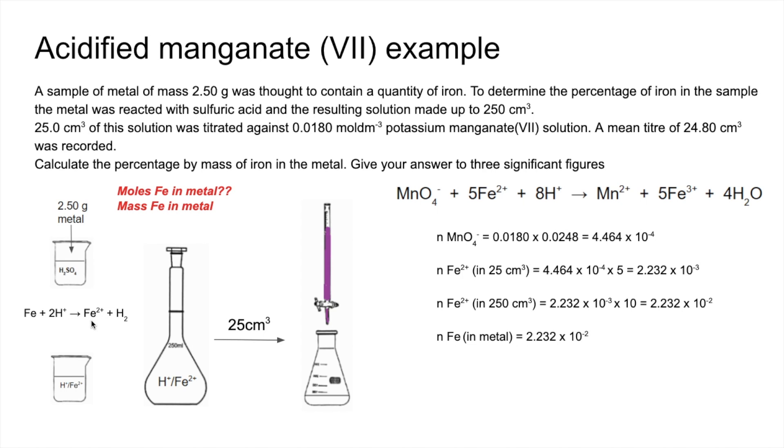And so now we know the moles of iron in the metal, we can turn that into grams by multiplying by the MR. So the metal actually contains 1.245 grams of Fe. So as a percentage to three significant figures, it's 49.8%.